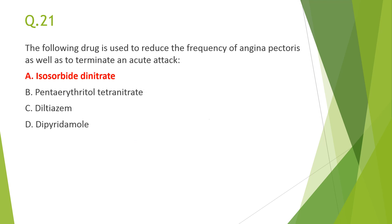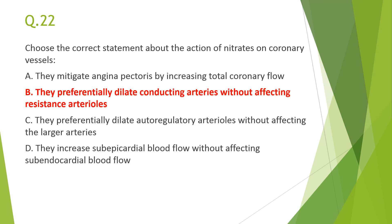Next: the drug used to reduce frequency of angina pectoris as well as to terminate an acute attack — answer A, isosorbide dinitrate. It is useful for acute attacks of angina via the sublingual route and for reducing the frequency of angina chronically. The other drugs are useful only for prophylaxis, and dipyridamole is not preferred.